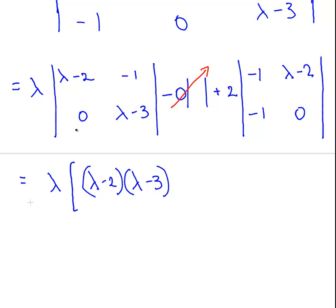The next bit is minus 0 times minus 1, which is just 0, so I'm going to skip the rest of it. Essentially the rest of that determinant of that sub-matrix just works out to be 0. Plus 2 times minus 1 times 0, which is 0.